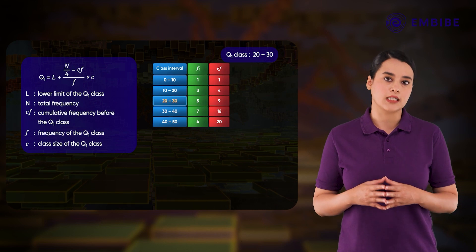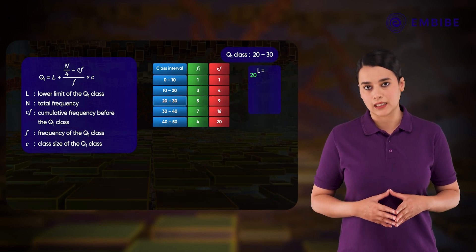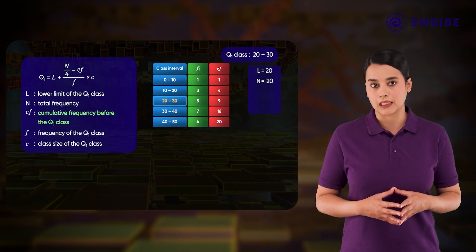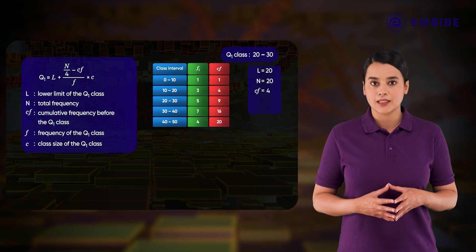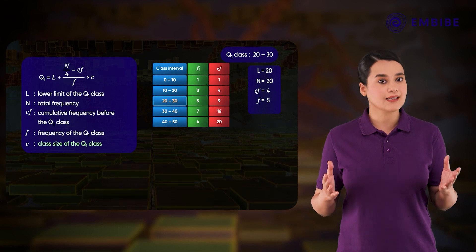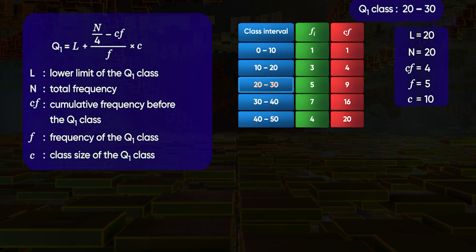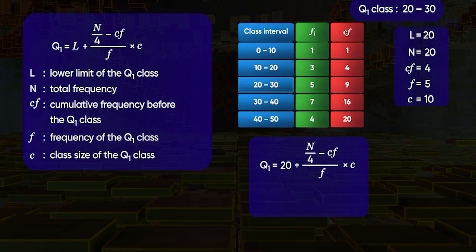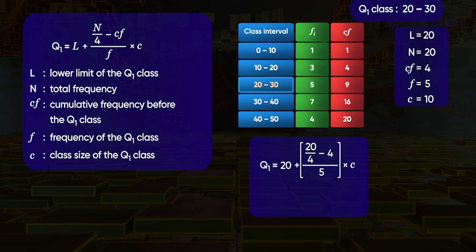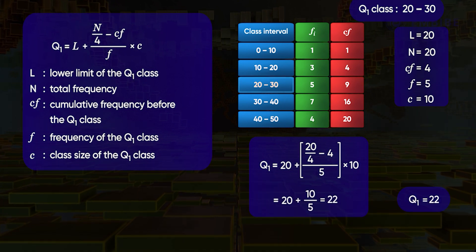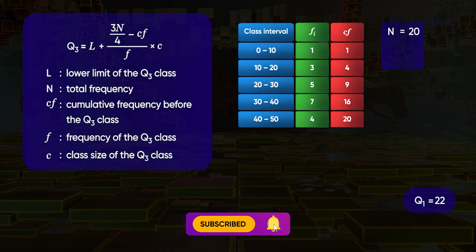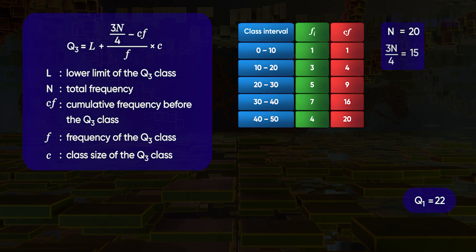The 5th observation lies in the class interval 20–30, so the Q1 class is 20–30. The lower limit of the Q1 class is 20, the cumulative frequency before the Q1 class is 4, the frequency of the Q1 class is 5, and the class size is 10. So Q1 = 20 + [(20/4 − 4) / 5] × 10 = 22.